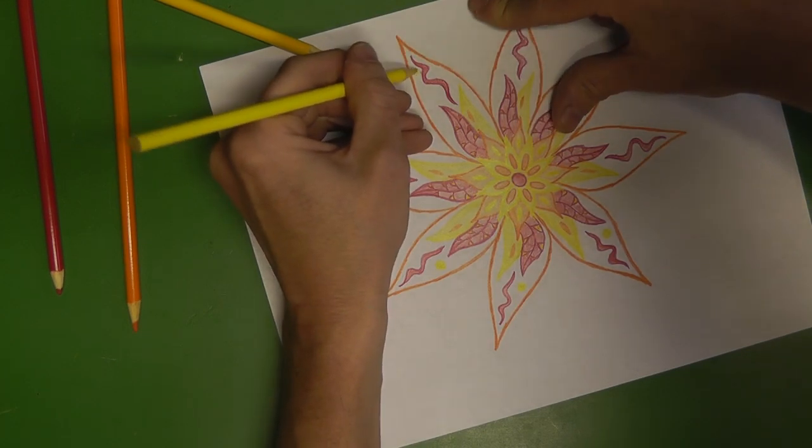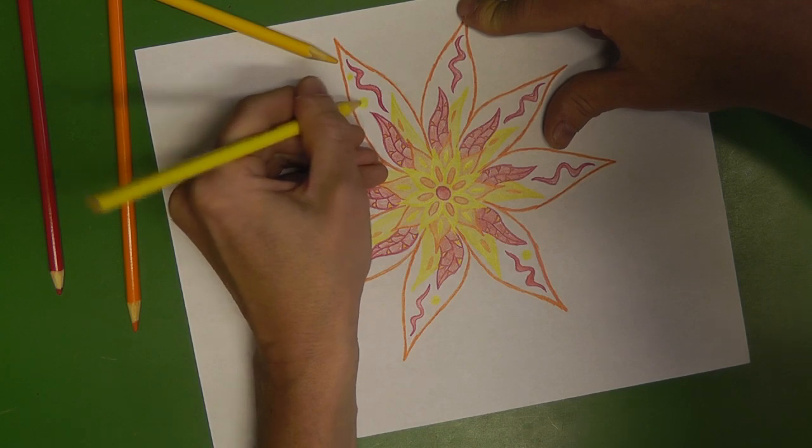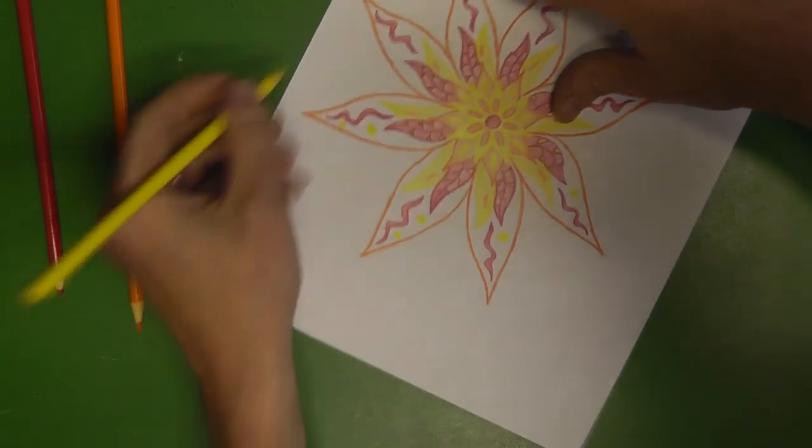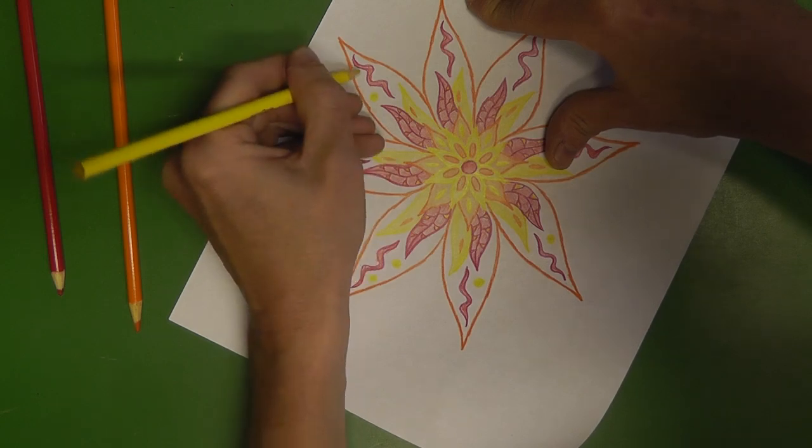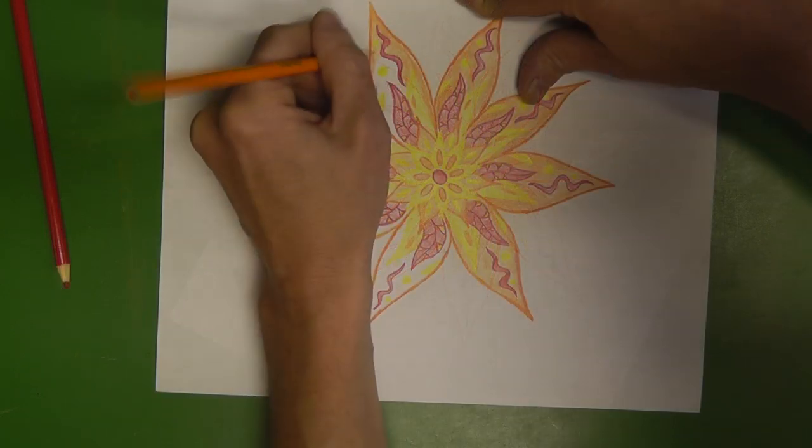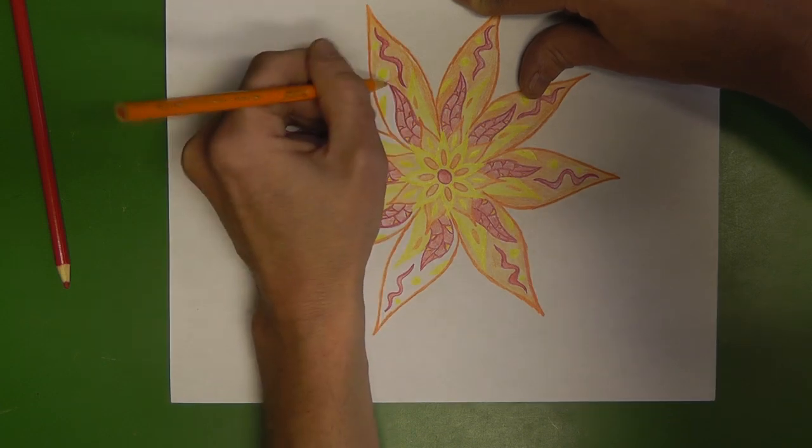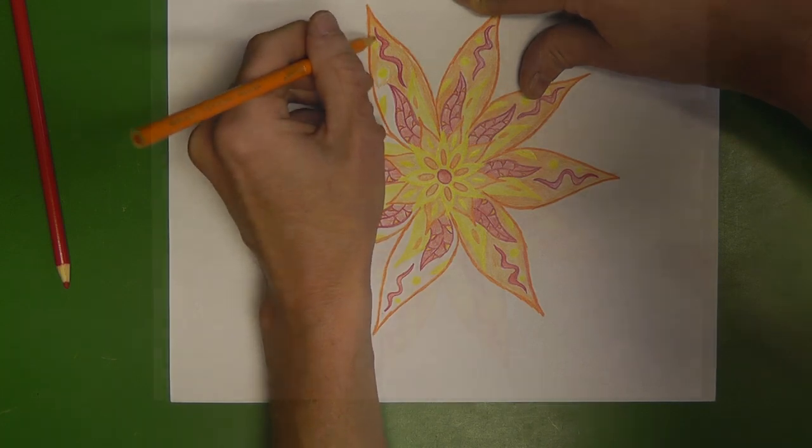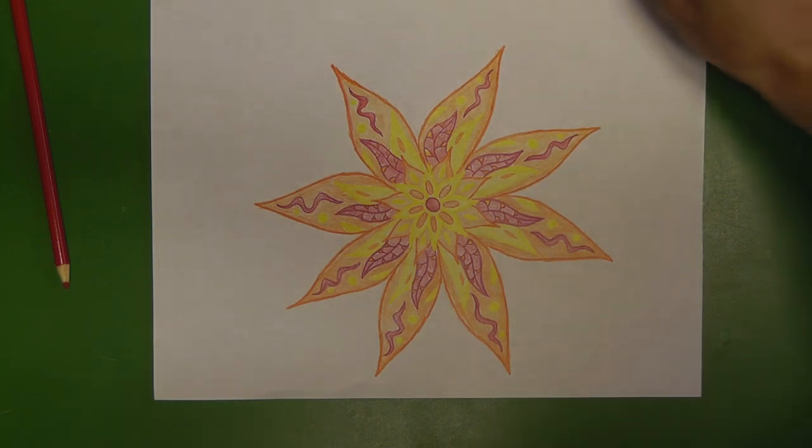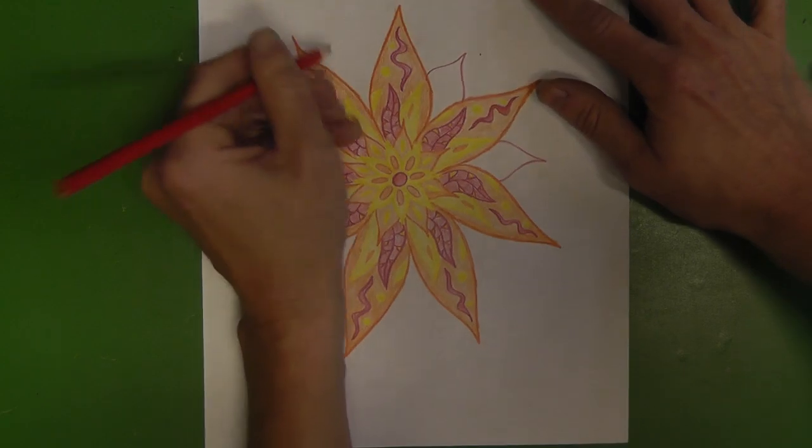So now that all eight of those curving red designs have been filled in, I'm now just adding some additional detail to all eight of those orange petals that I've created. Remember, you want to repeat the same design that you create, and keep it symmetrical or concentric as you go around the mandala. And there you can see what I've done so far, after filling in all eight of those orange petals.